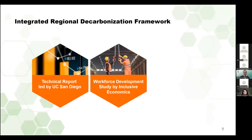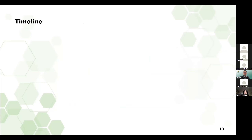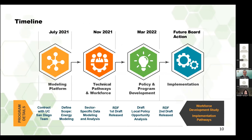Reconociendo la necesidad de tener un enfoque regional para abordar el cambio climático, en enero del año pasado la Junta de Supervisores votó para crear un marco regional de descarbonización. Este marco tiene como objetivo proporcionar vías basadas en la ciencia para informar la formulación de políticas en los gobiernos regionales del condado y de la ciudad para reducir las emisiones de gases de efecto invernadero en la región de San Diego. Es independiente, pero complementa los esfuerzos de planeación de acción climática de los gobiernos locales.